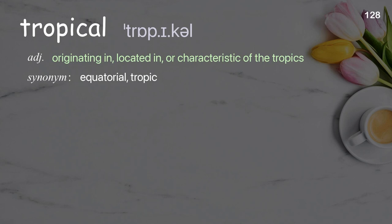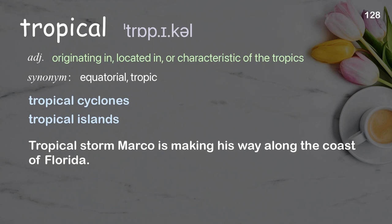Tropical: Originating in, located in, or characteristic of the tropics. Examples: tropical cyclones, tropical islands. Tropical Storm Marco is making his way along the coast of Florida.